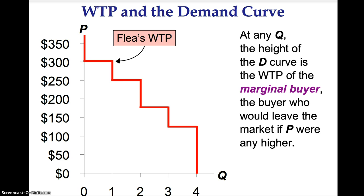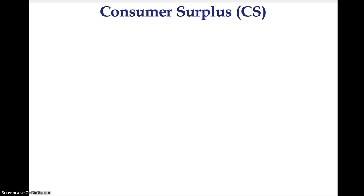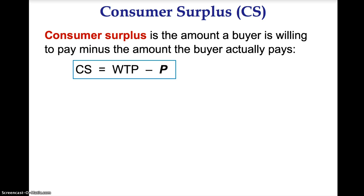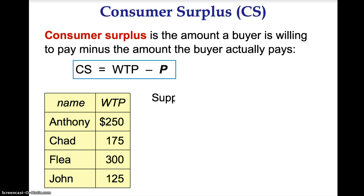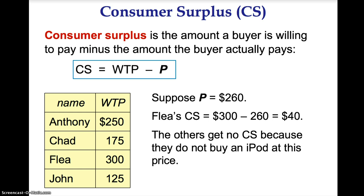Flea's willingness to pay is $300, Anthony's willingness to pay is $250, Chad's willingness to pay is $175, and John's willingness to pay is $125. Consumer surplus, or CS for short, is the amount a buyer is willing to pay minus the amount actually paid. The math formula is CS equals WTP minus P. Suppose that price equals $260. Flea's consumer surplus would be $300 minus $260, which equals $40. The other three buyers would not receive any consumer surplus since they do not buy an iPod at this price. Total consumer surplus would be $40.